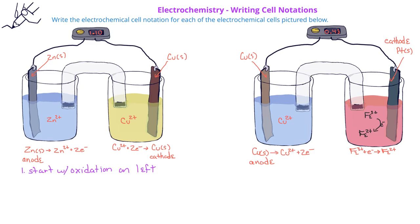and so we would write zinc solid, and then a single vertical line, and then the zinc 2 plus aqueous ions. The zinc solid, zinc 2 plus, represents the oxidation half-cell.